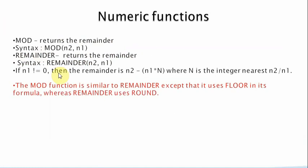The next numeric functions are MOD and REMAINDER. These functions are similar and are used to return the remainder of a division. The syntax is MOD(n2, n1) and REMAINDER(n2, n1). The remainder is calculated as n2 minus n1 multiplied by n, where n is the integer nearest to n2 divided by n1. MOD and REMAINDER use the same formula, but MOD uses FLOOR while REMAINDER uses ROUND for calculating n.